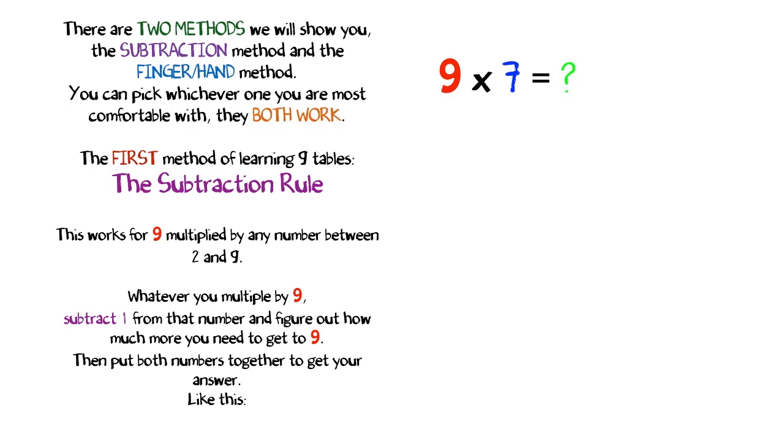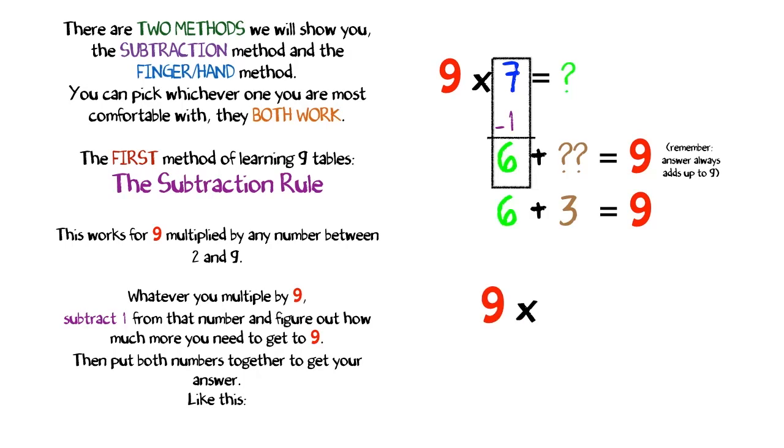In this example, we're trying to figure out what 9 times 7 equals. If we subtract 1 from 7, we get 6 and we need to figure out what to add to the 6 to equal 9. In this case, it's 3. So 9 times 7 equals 63.